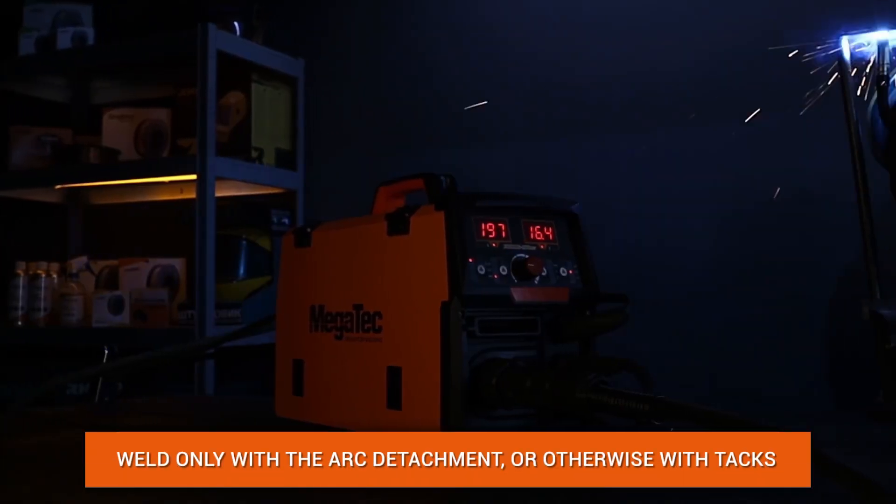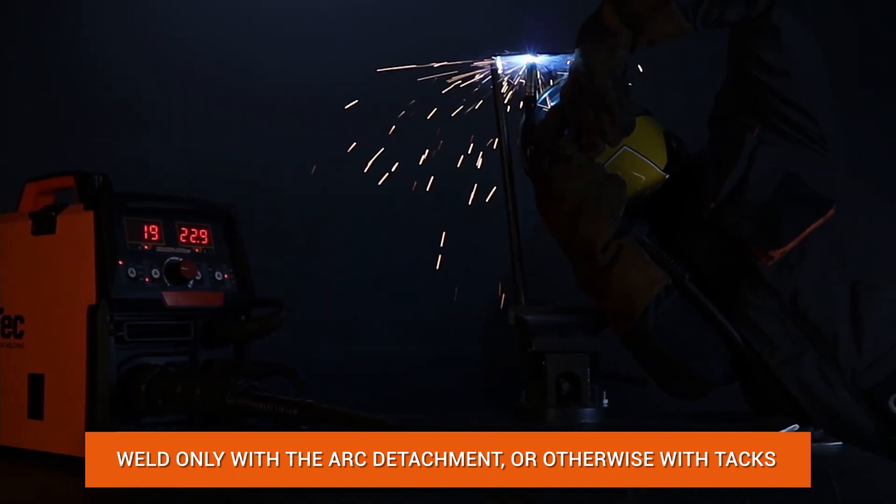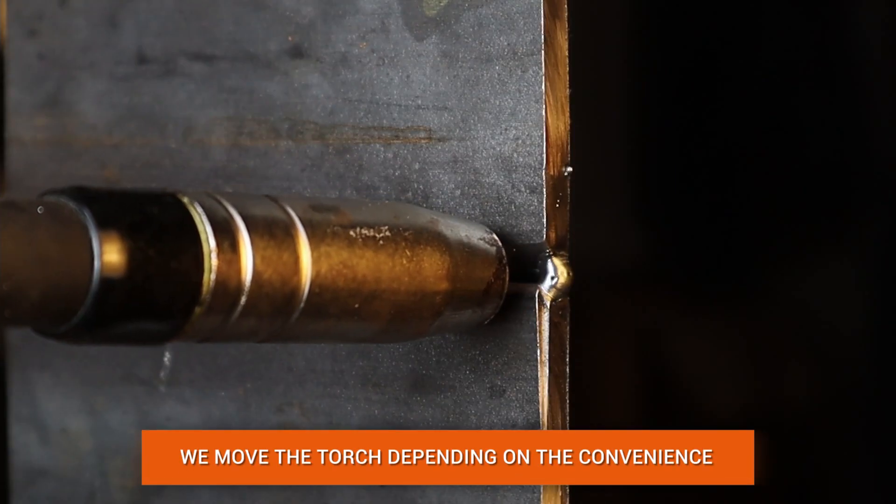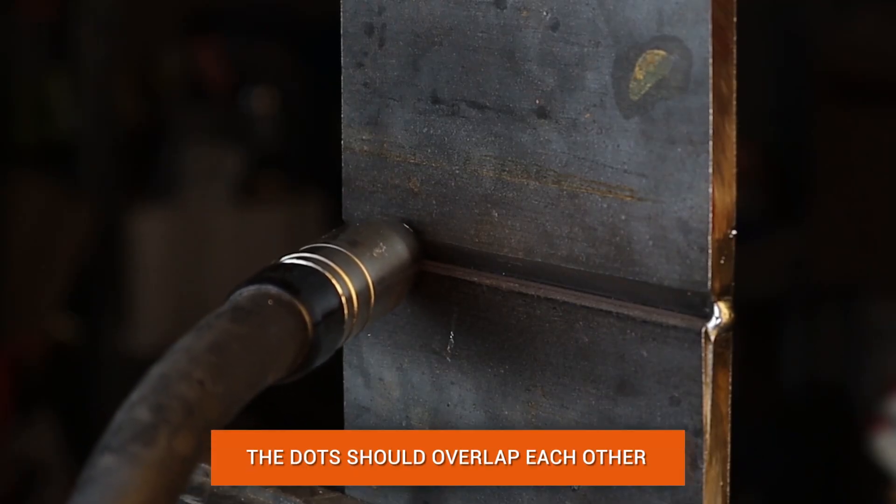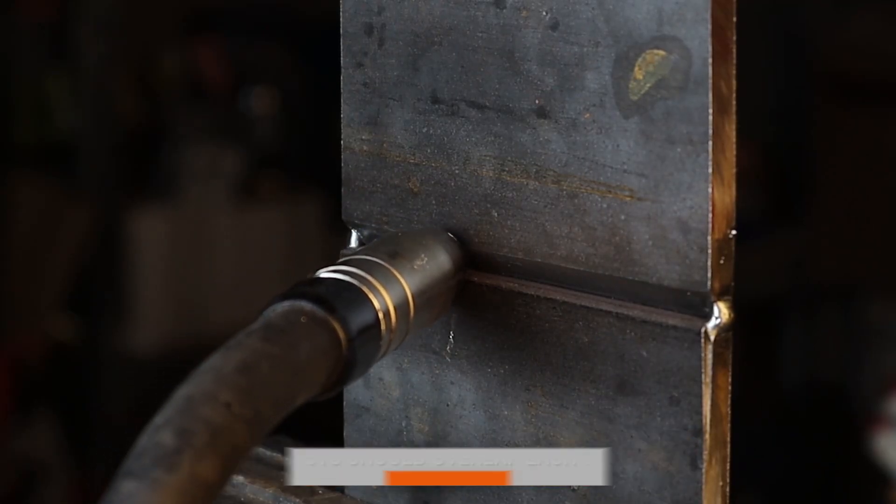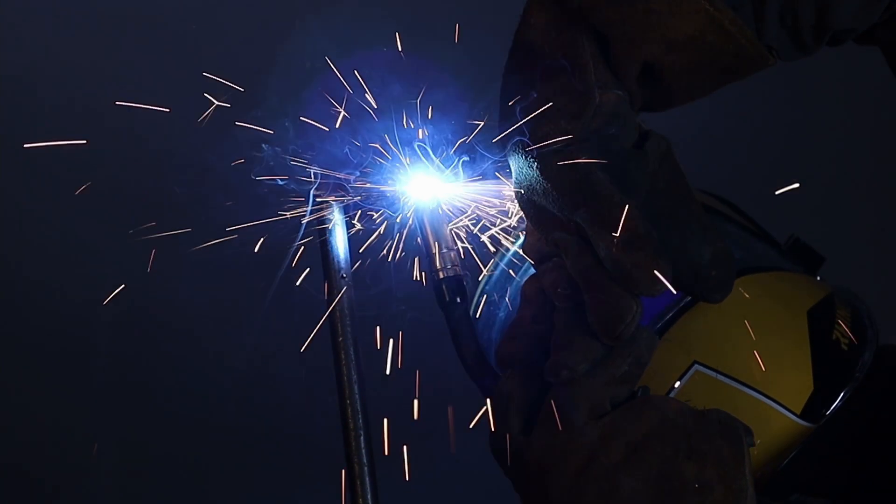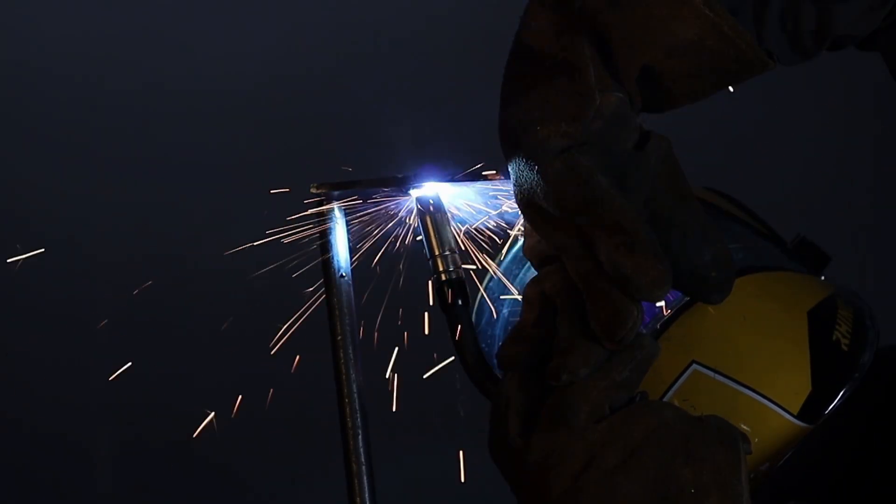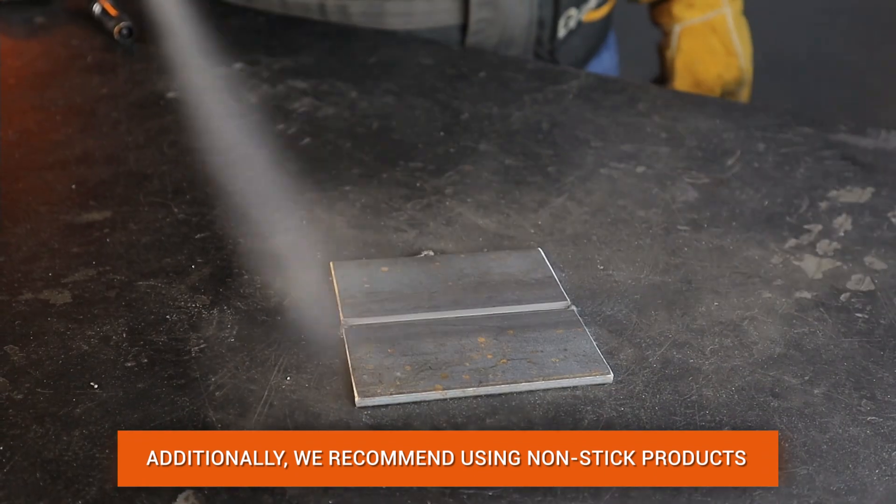Welding should be done only with the arc detachment or otherwise with tacks. The type of welding is selected depending on the desired result. A novice welder can choose a more convenient type of welding torch angle from 30 to 45 degrees. The position of the welder is also important. The welder must have a clear view of the weld pool and the arc itself. To improve the quality of the weld, use non-stick agents.